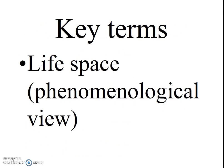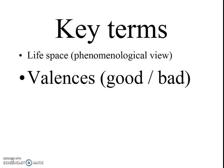The key terms in understanding Lewin are the following. Each individual has his or her own life space. That's the phenomenological point of view, as the world and its opportunities and threats are seen from that individual's own perspective. In the life space there are various valences: values, good things, bad things, opportunities, and threats.